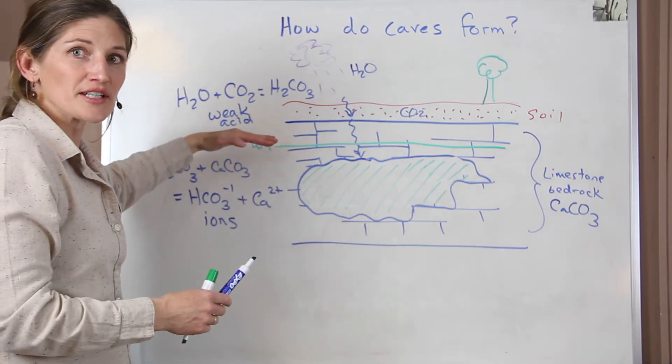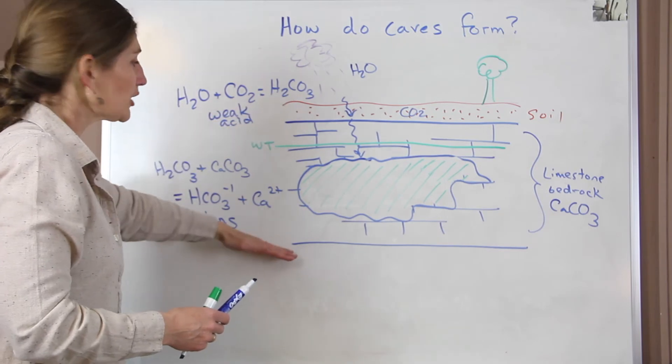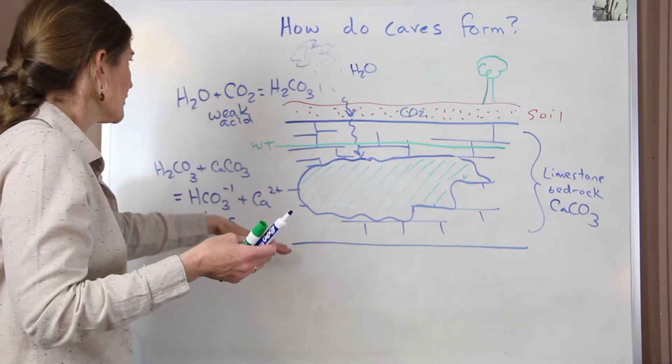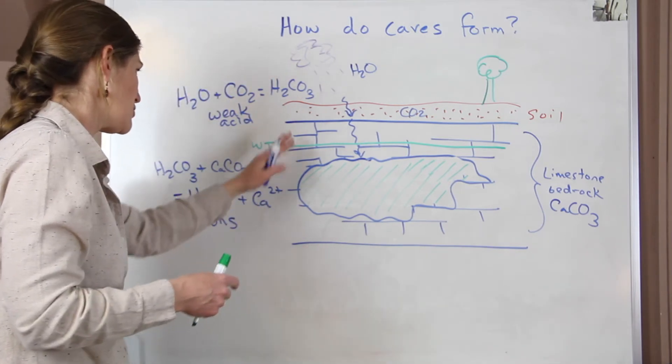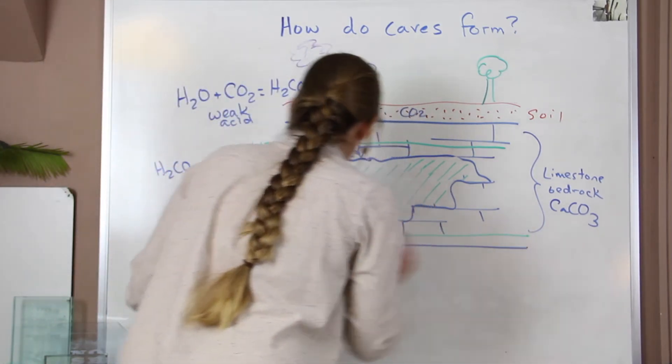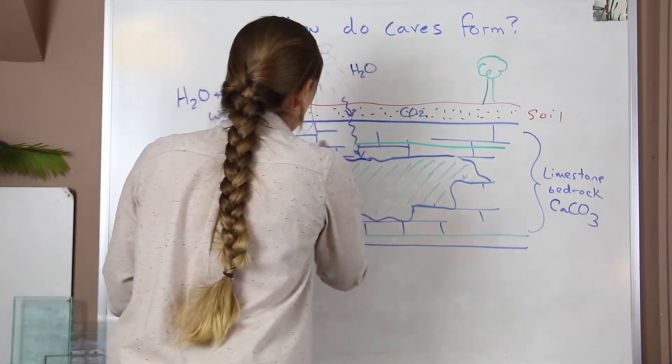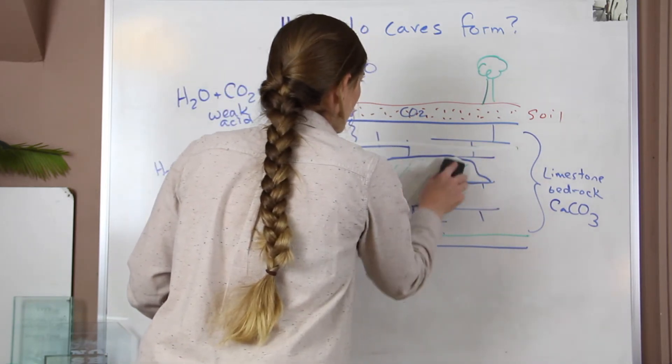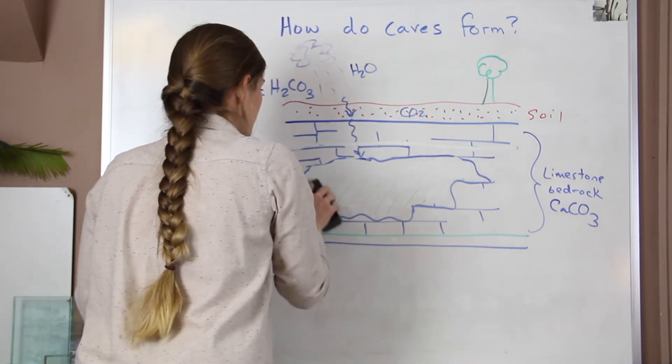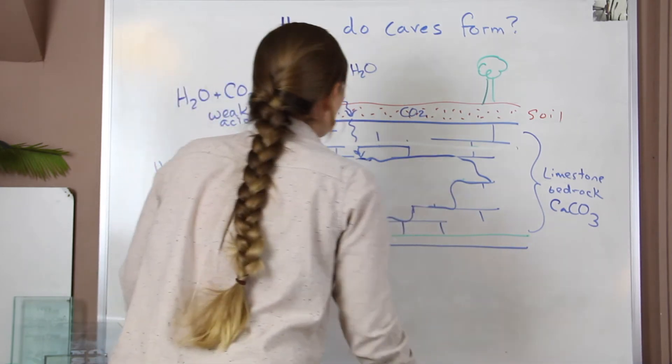Now over time, we know that water tables fluctuate and sometimes they go down. So we might have had the water get lowered for various reasons. Land can be uplifted. Water can be drawn out by many kinds of reasons. We might have less precipitation. So we have that water table lowers. When the water table is below our cave system, I can erase it to avoid confusion. The cavity empties of water because again, the water is going to seep down through the rocks until it joins the water table.